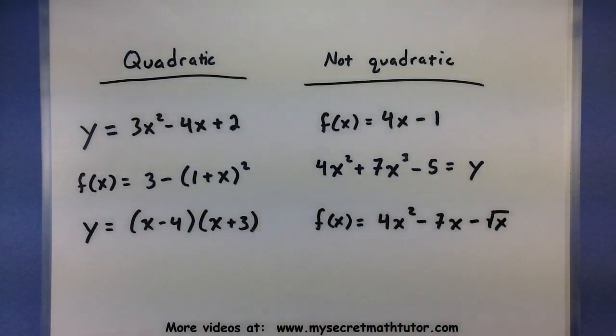Here's one last one. This one's a close call. You'll see that it has an x squared and that x squared does happen to be the highest power. Unfortunately, this guy is still not quadratic because it also contains a square root on one of the x's.